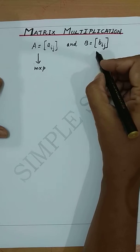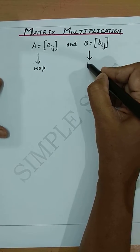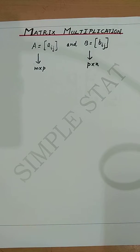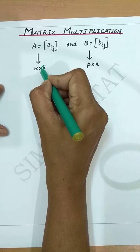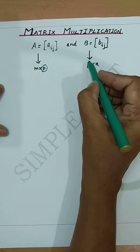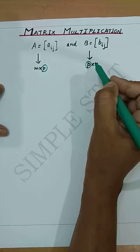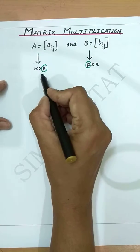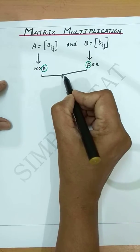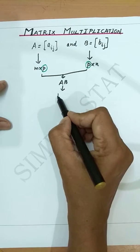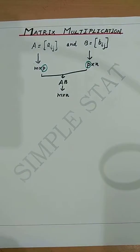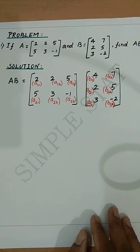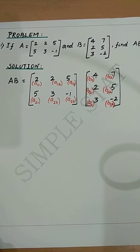...and B is a matrix of order P×N, then these two matrices can be multiplied, since the number of columns in matrix A equals the number of rows in matrix B. Their product matrix AB will be of order M×N.